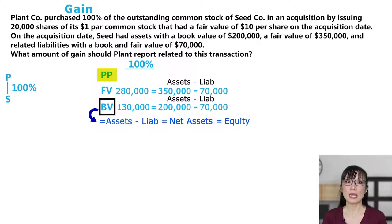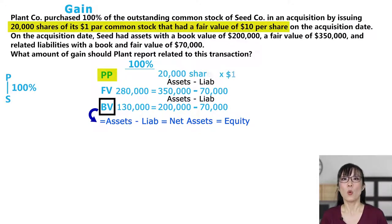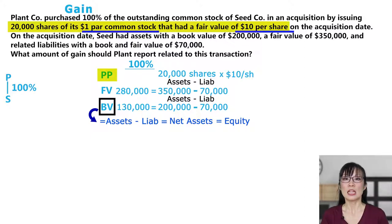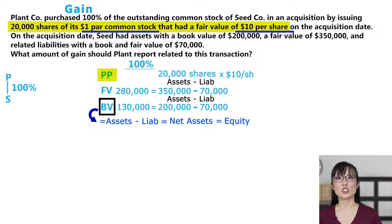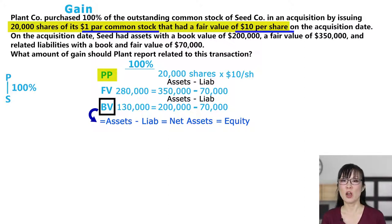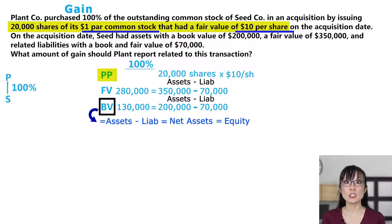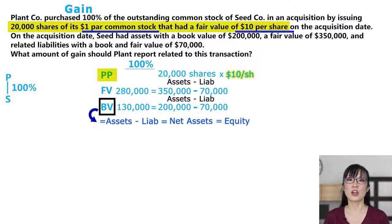Third, the purchase price paid. Plant paid using 20,000 shares of $10 per share. Why do we use the $10 fair value rather than the $1 par value? Theoretically, Plant could have gone to the stock market and sold its shares for $10 each and then paid for Seed with that cash. Par value really doesn't mean much of anything — it's a made-up accounting and legal term with nothing to do with real-life value. So 20,000 shares times $10 equals $200,000.